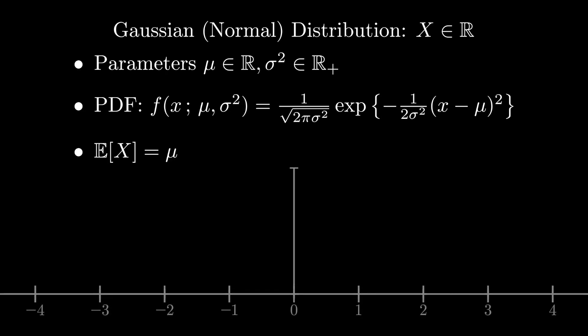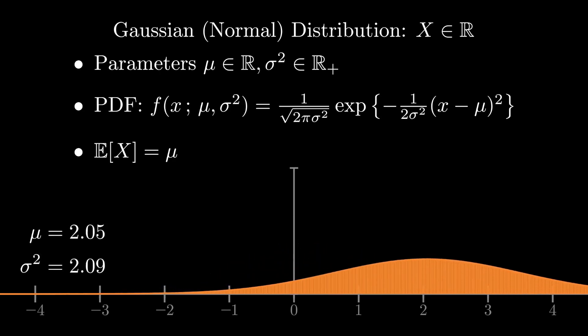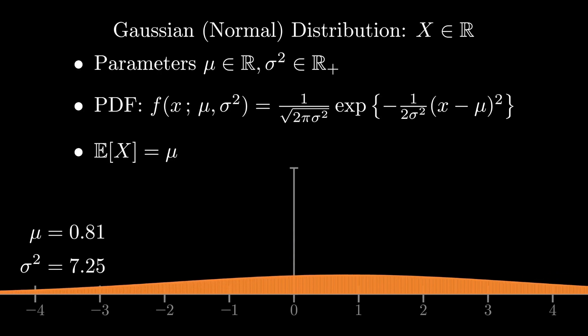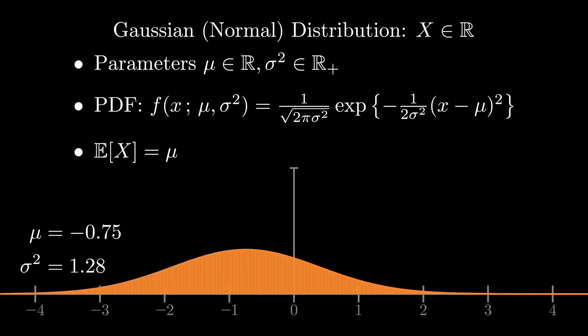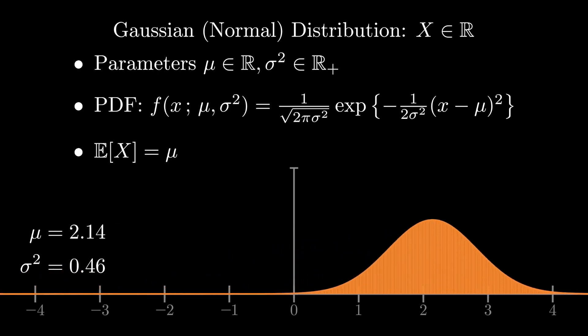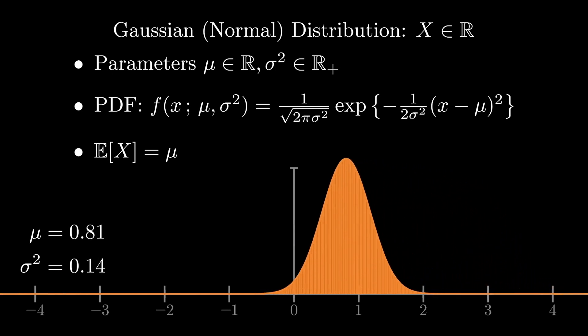The central limit theorem essentially shows that if you have a sum of almost any other kind of random variable with a finite mean and variance, that that sum will converge to a Gaussian distribution asymptotically. In a lot of different scientific domains, we often want to talk about aggregates, whether they're particles or people. And when we talk about aggregates of many, many different things acting randomly, then we would expect those aggregates to converge to a Gaussian distribution.